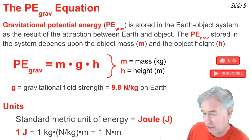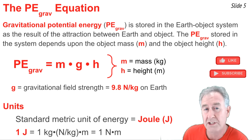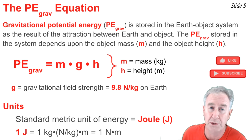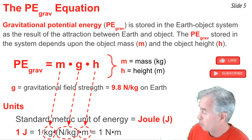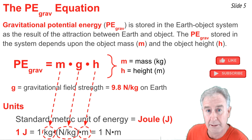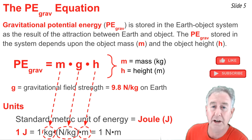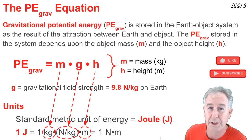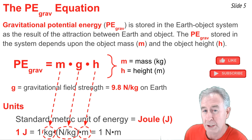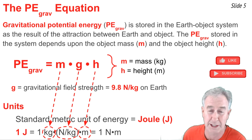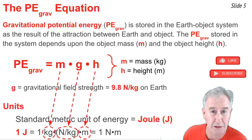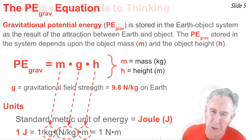One joule must equal the unit of mass times the unit of g times the unit of h — that is, a kilogram times a newton per kilogram multiplied by a meter. The kilogram and per kilogram cancel, leaving a newton times a meter, which we described in a previous video as the unit of work. Work and energy share the same units: the newton-meter, or the joule.